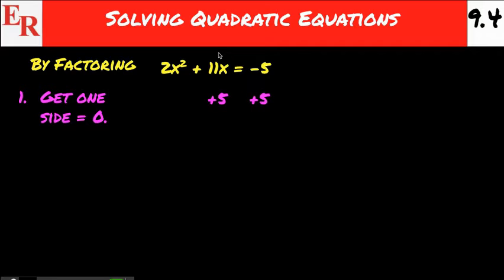But to get one side equal to 0, we're just going to add 5 to the right-hand side, which means we have to add 5 to the left-hand side. And that's going to give us 2x squared plus 11x plus 5 equals 0.